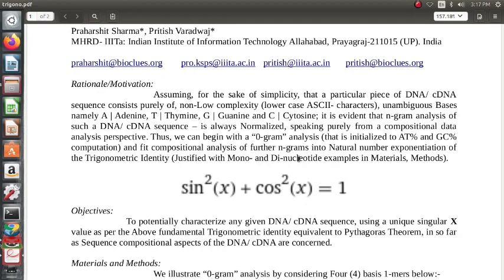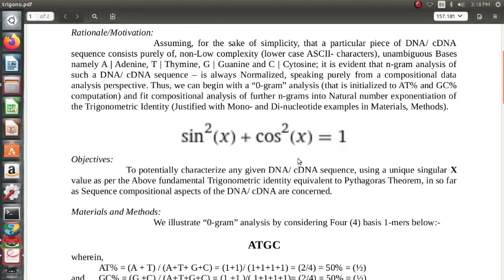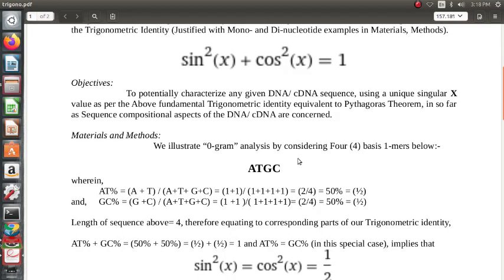So speaking purely from a compositional data analysis perspective, we can begin with a 0-gram analysis. So as to say, 4 to the power 0 is 1, right? So with 0-gram analysis, we consider that to be AT% and GC% composition and compositional analysis of further n-grams into natural number exponentiation of the trigonometric identity, which we know as the famous Archimedes or Pythagoras identity. In terms of trigonometric function, sin²(x) + cos²(x) = 1.